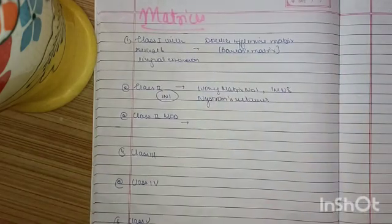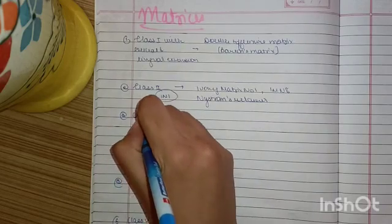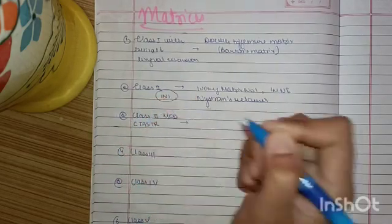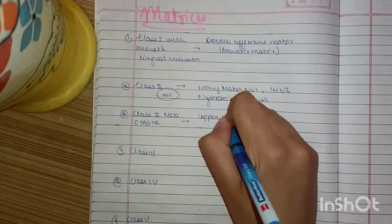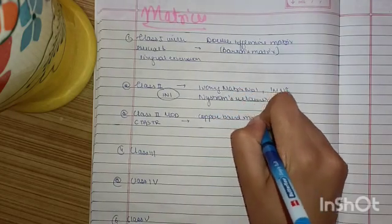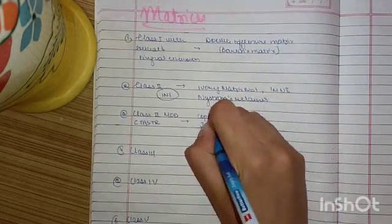Now for the Class 2 MOD, you must remember C-TASTR. Now over here C stands for copper band matrix. T stands for Toffelmeyer matrix. Then A stands for anatomic matrix band.